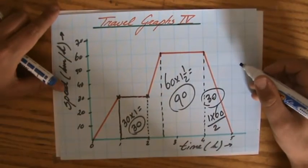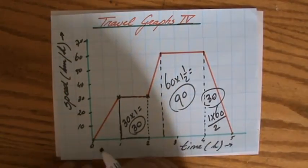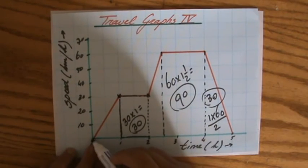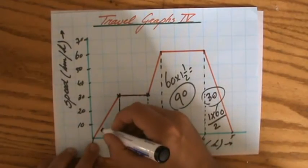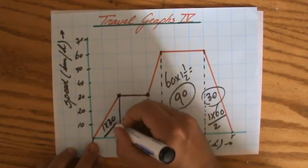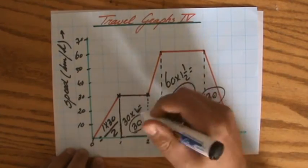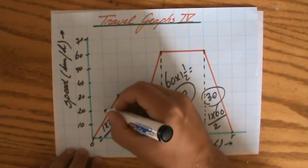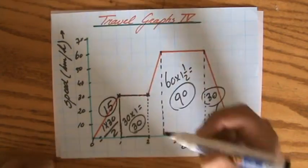What about this triangle? Base times height divided by 2. 1 times 30 divided by 2. So that is 15. I like to keep it here with a circle around it.